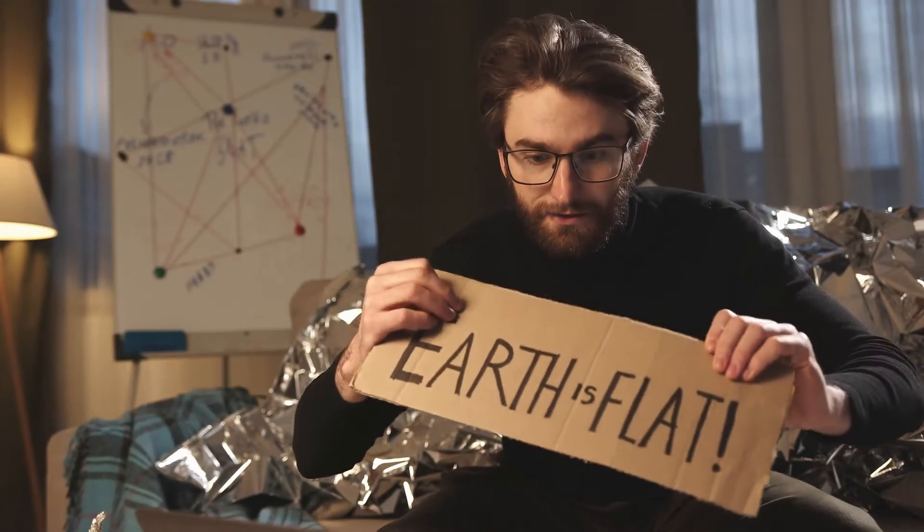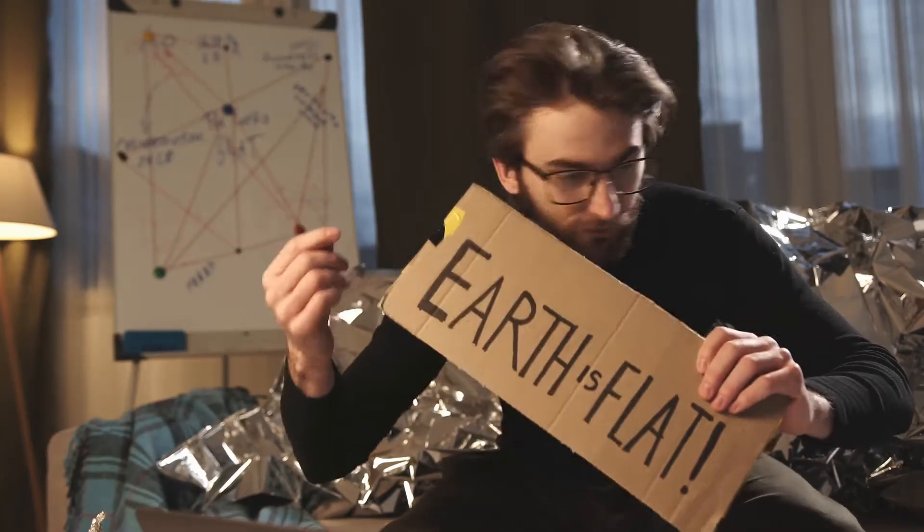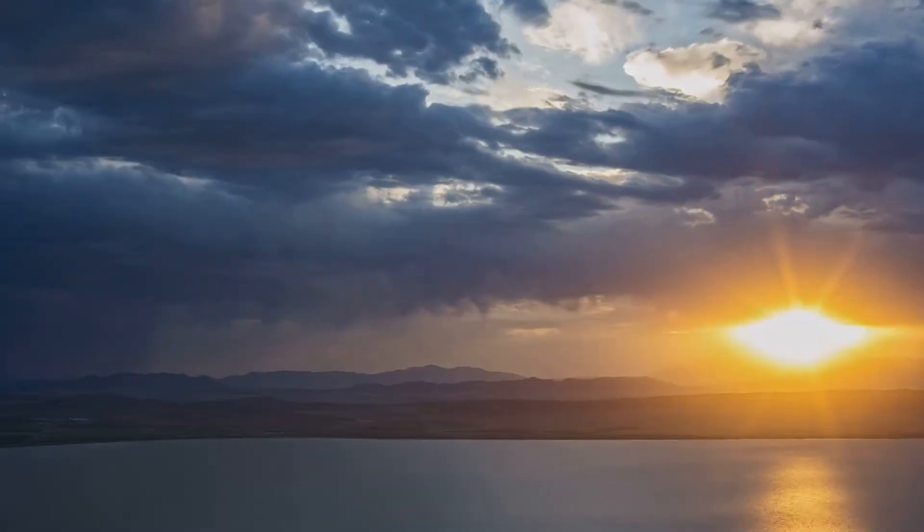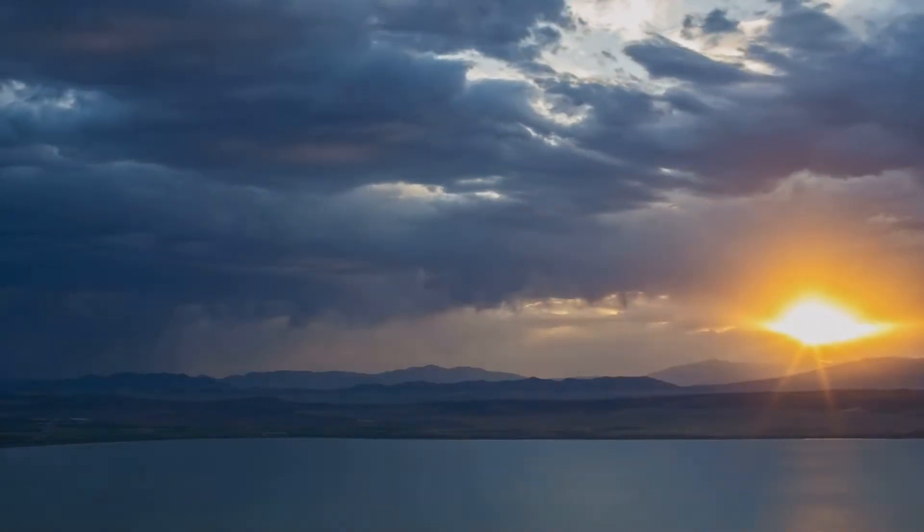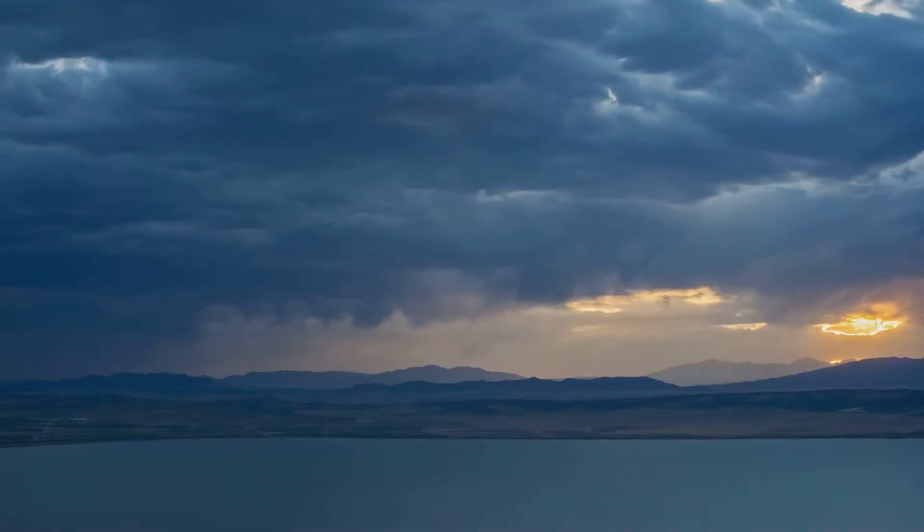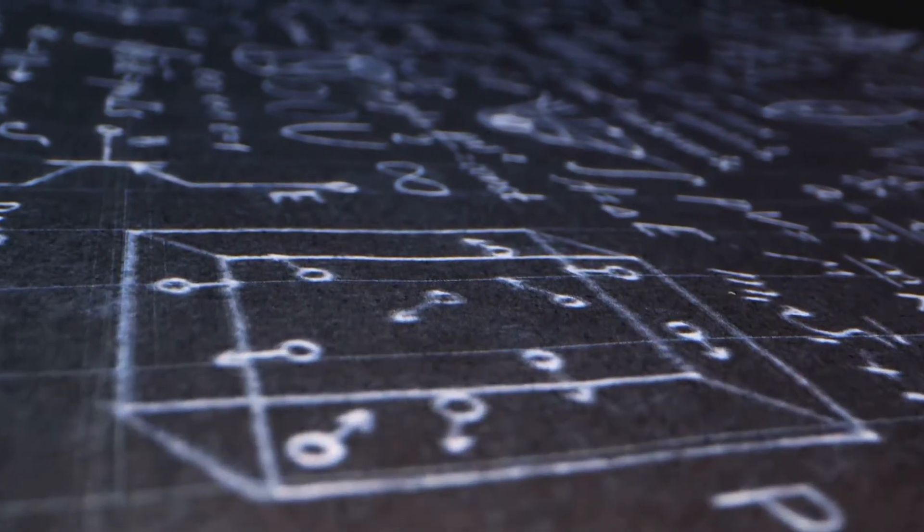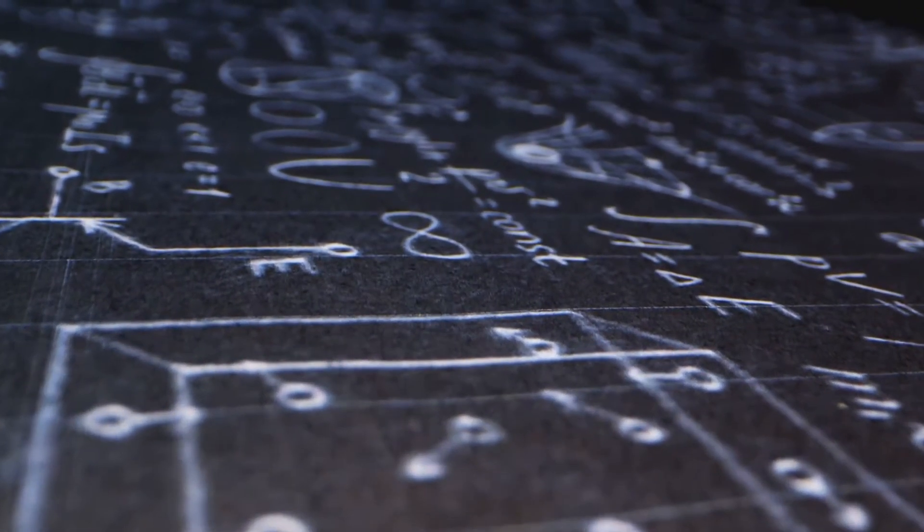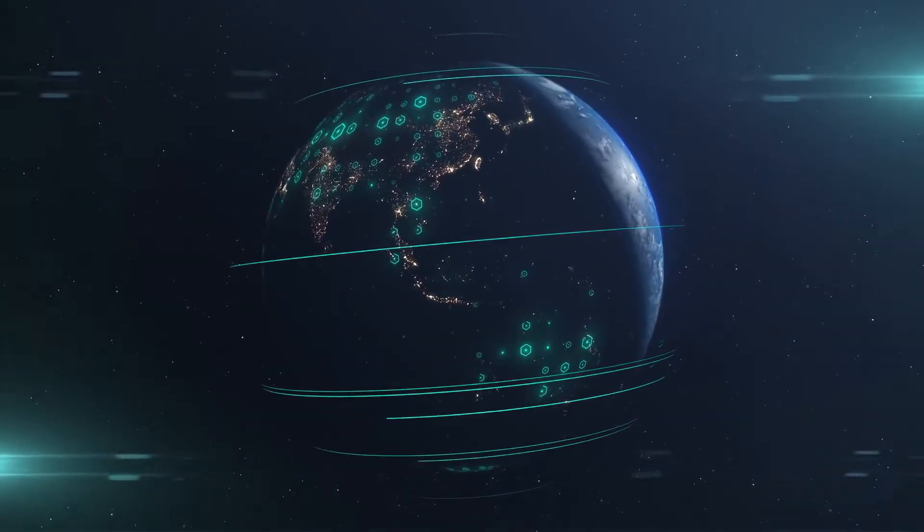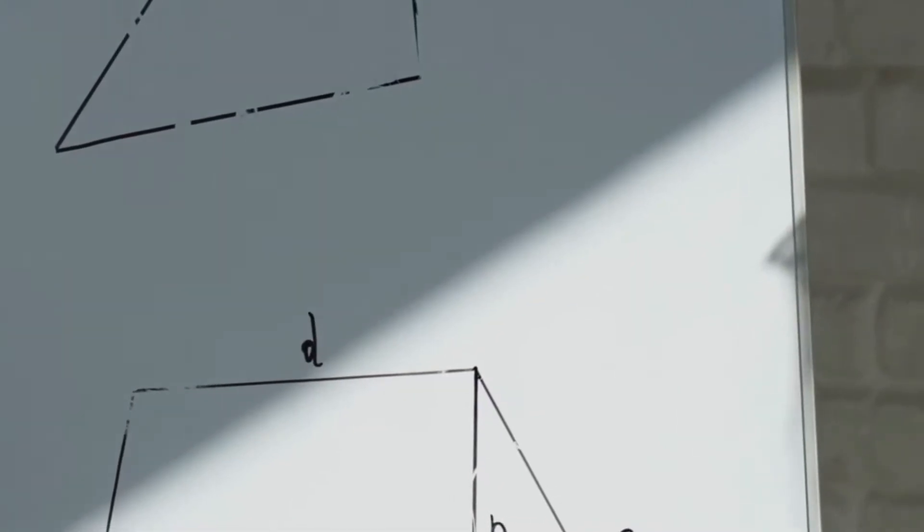Flat Earth arguments may sound intuitive, but they collapse under scrutiny. Let's start with that skyline. What you see over Lake Michigan is caused by atmospheric refraction, a known phenomenon where light bends along temperature gradients. It doesn't mean the Earth is flat, it means physics works. The 8 inch per mile squared formula is only an approximation and fails beyond short distances. The correct calculation uses the Pythagorean theorem or the Sagitta formula and always includes variables for refraction.